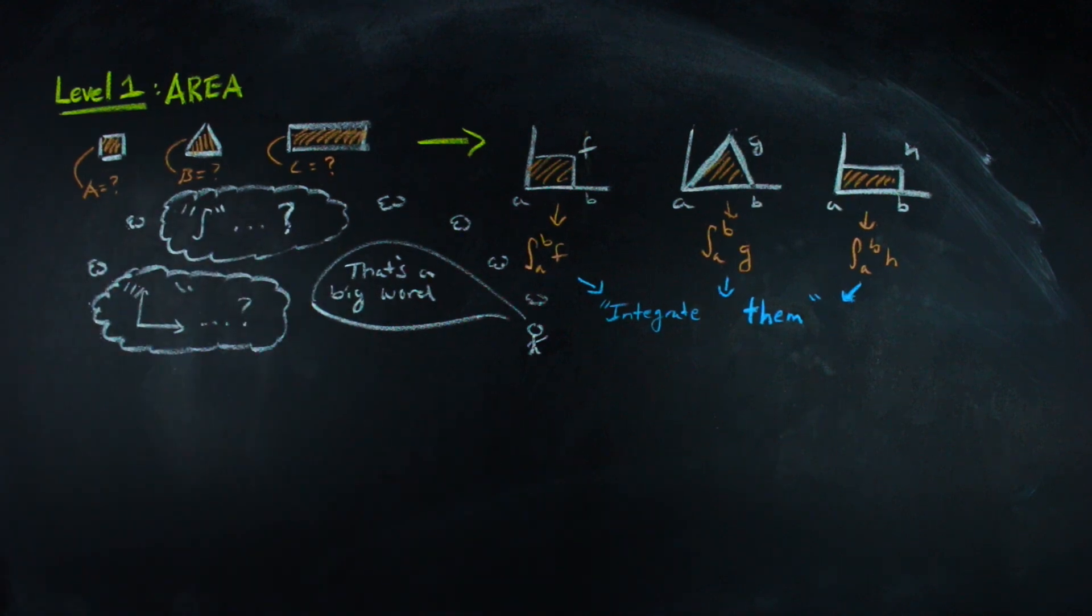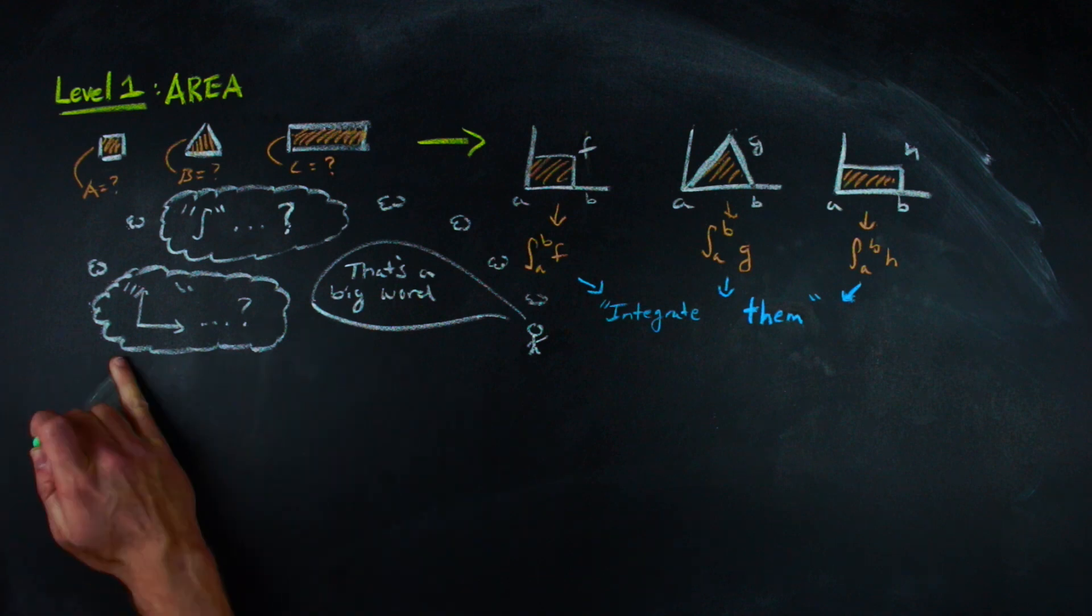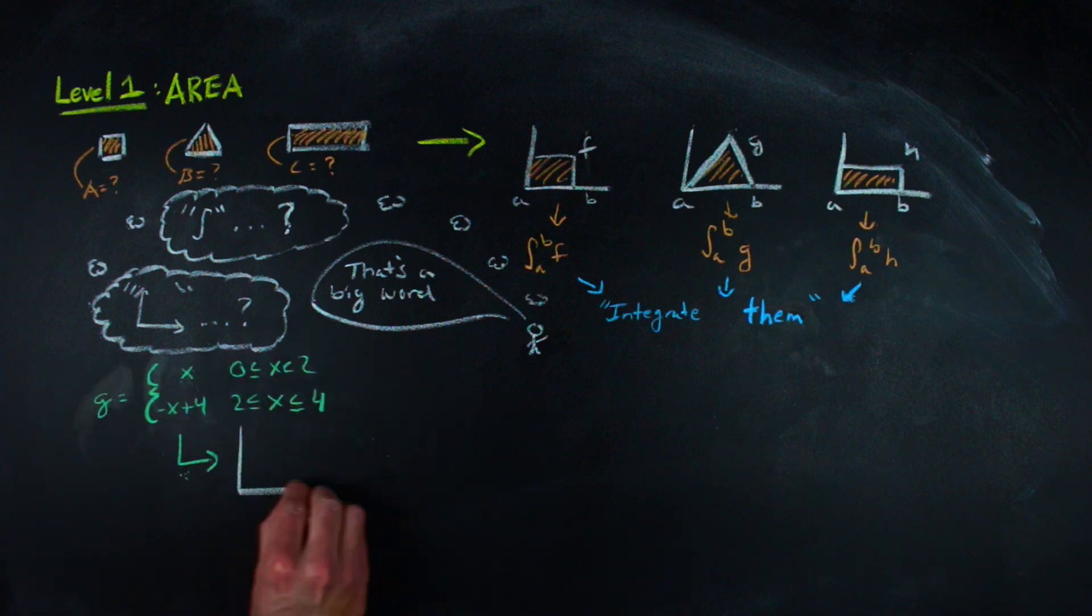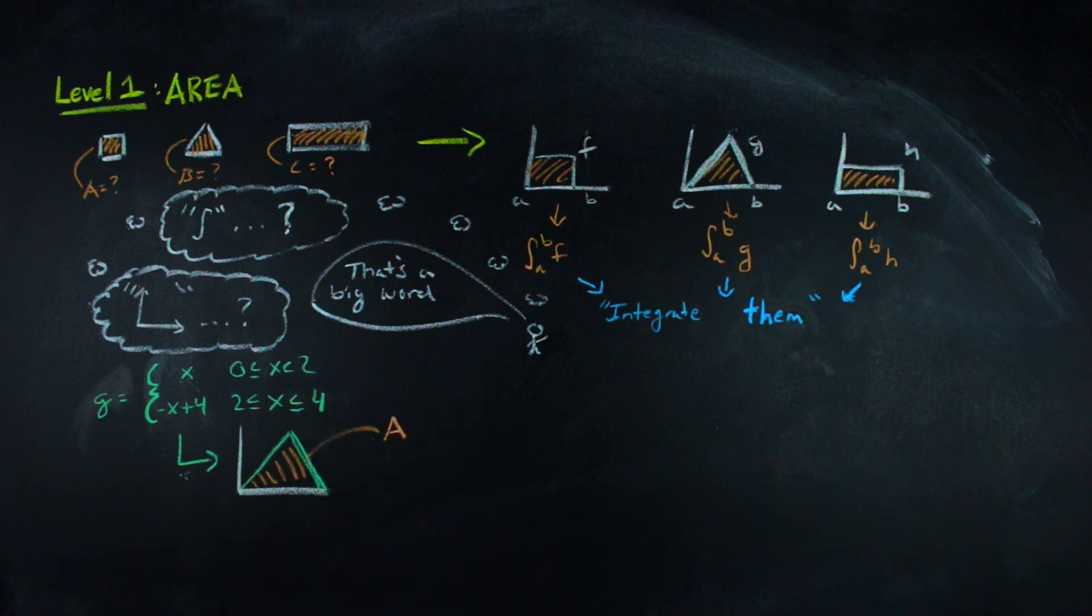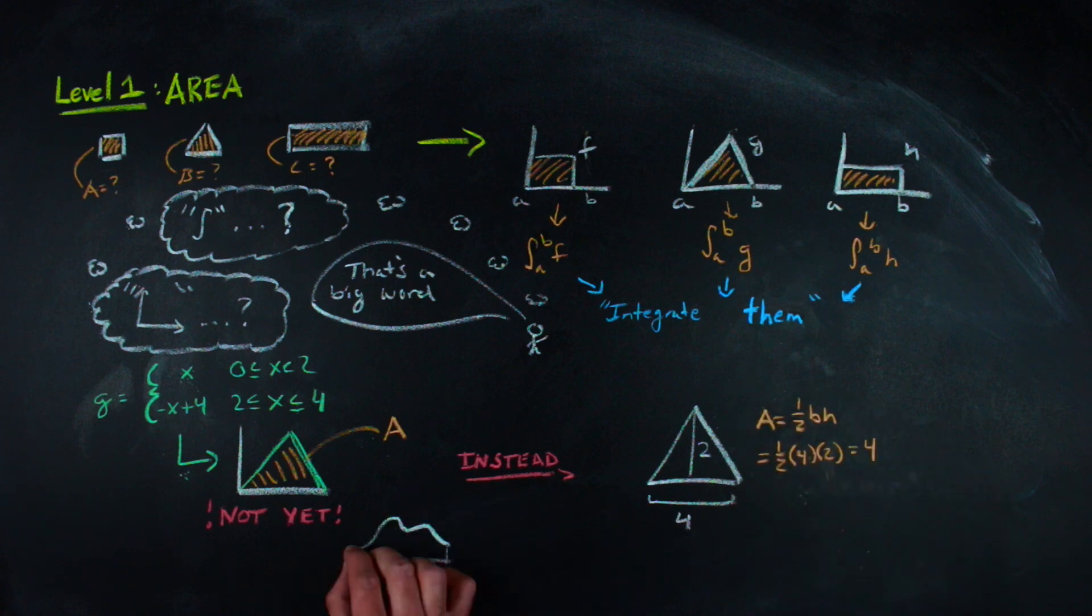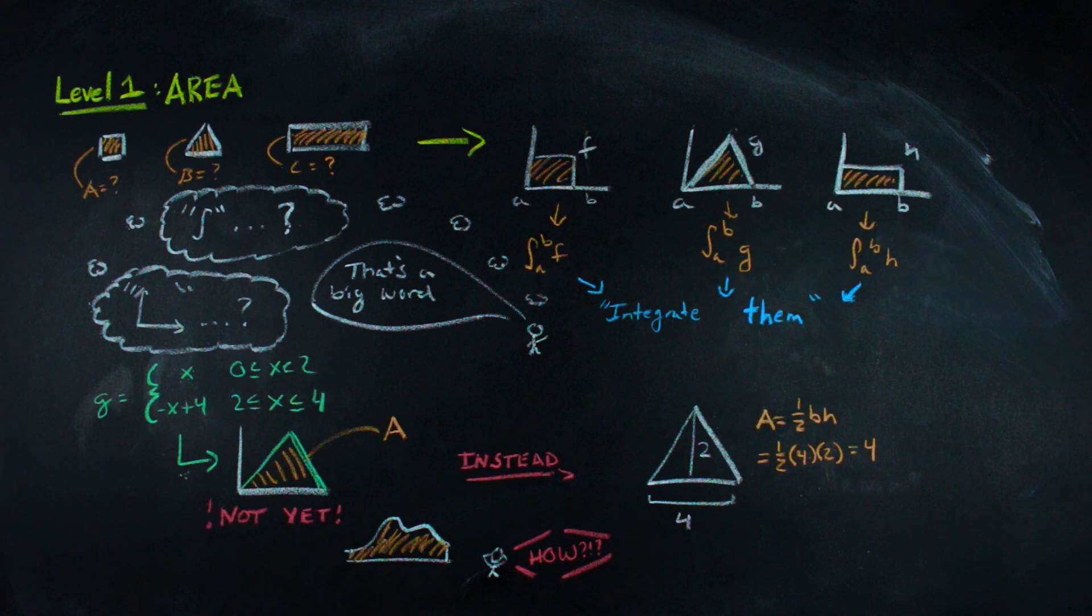If the first time you had to calculate area, someone gave you this equation, which just forms a triangle with the x-axis, you'd probably give up. It'd be too much all at once, so we don't do that at all. Instead, geometry, and you geometry until, well, you see something like this. Which brings me to number two.